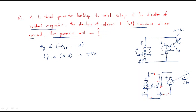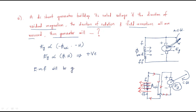When the field connections are reversed, current enters from the other side. Since it is a source, current entering from this side means the flux will be in the same direction as the residual magnetism. So the flux direction aligns with the residual magnetism, and the generated EMF will again become positive.